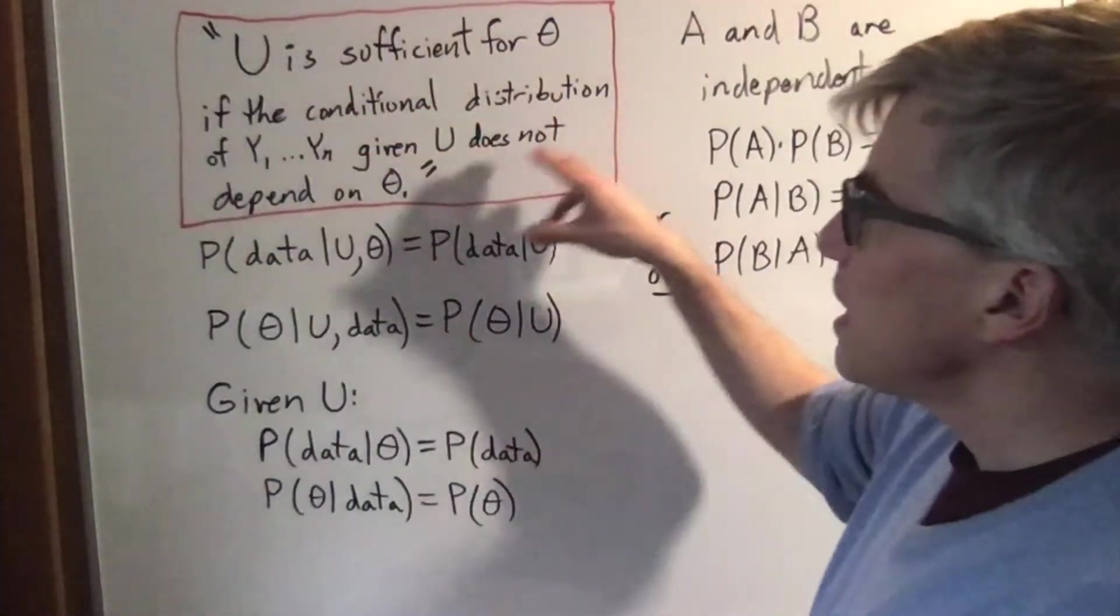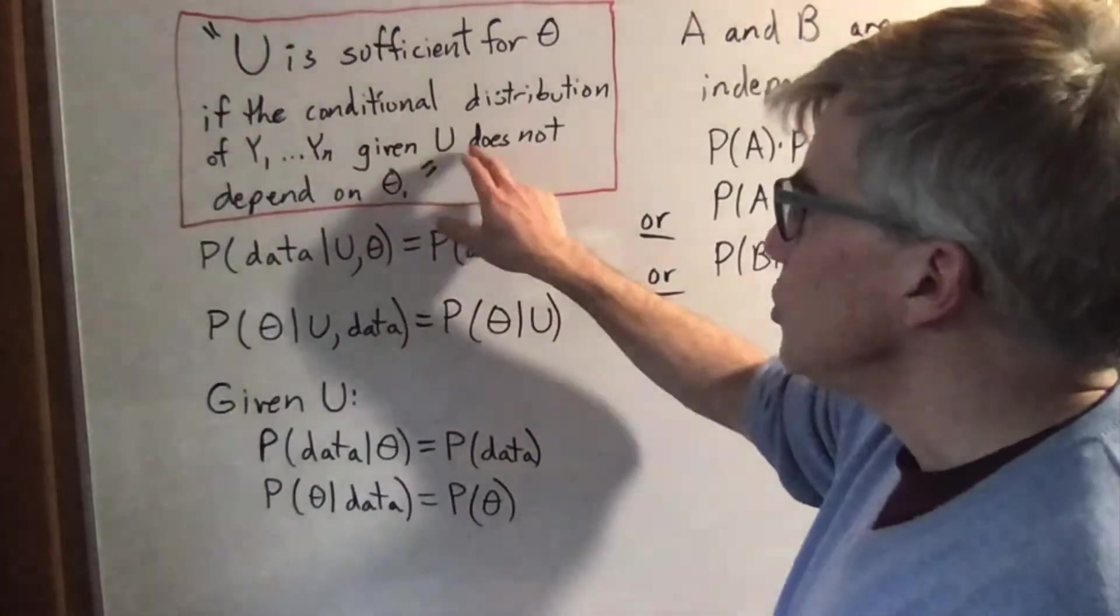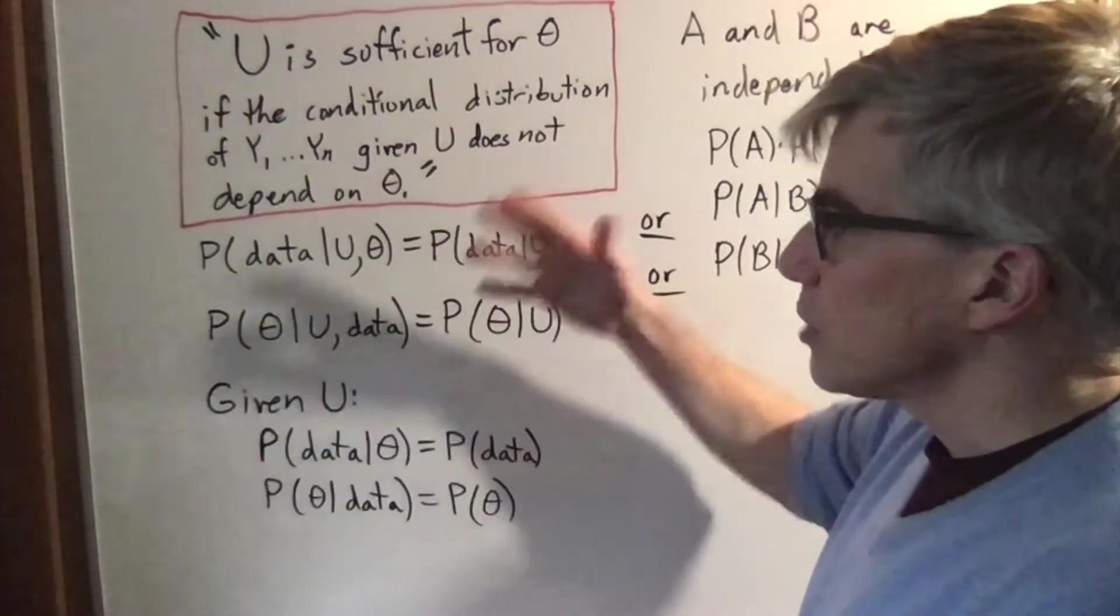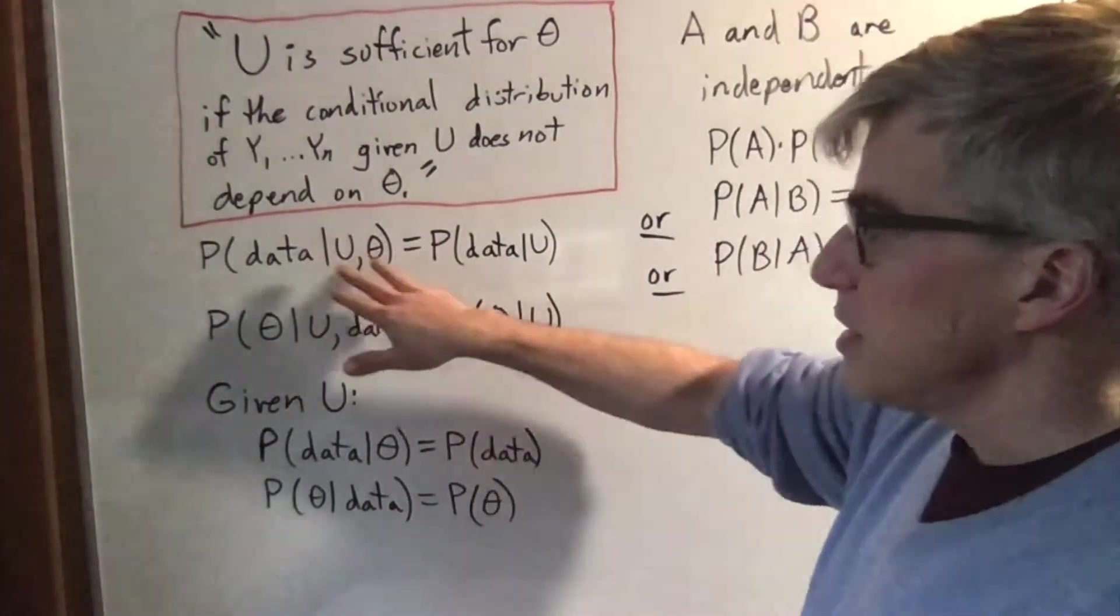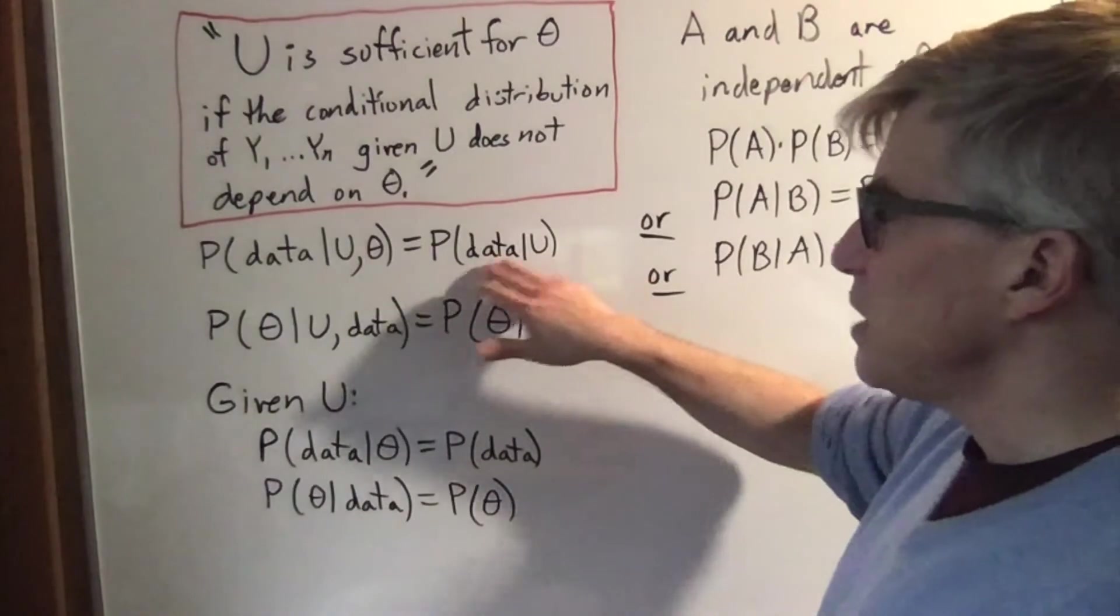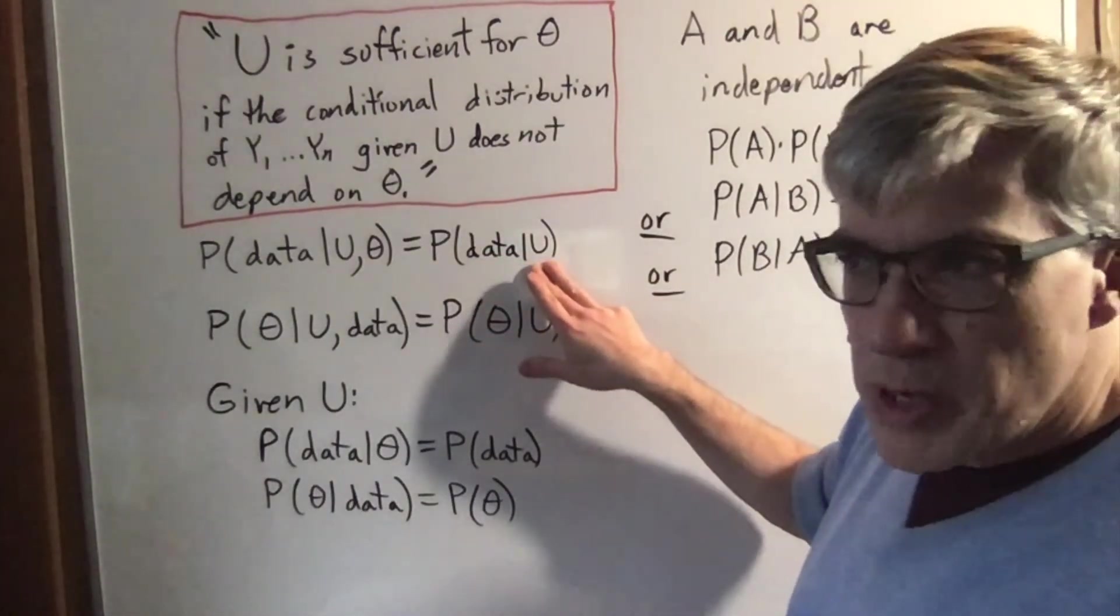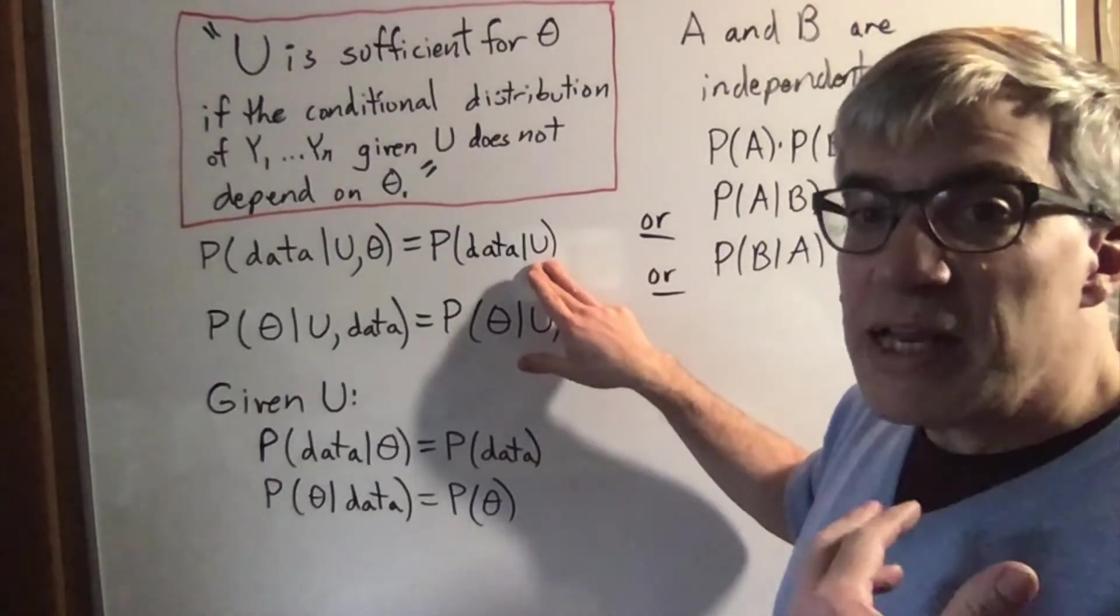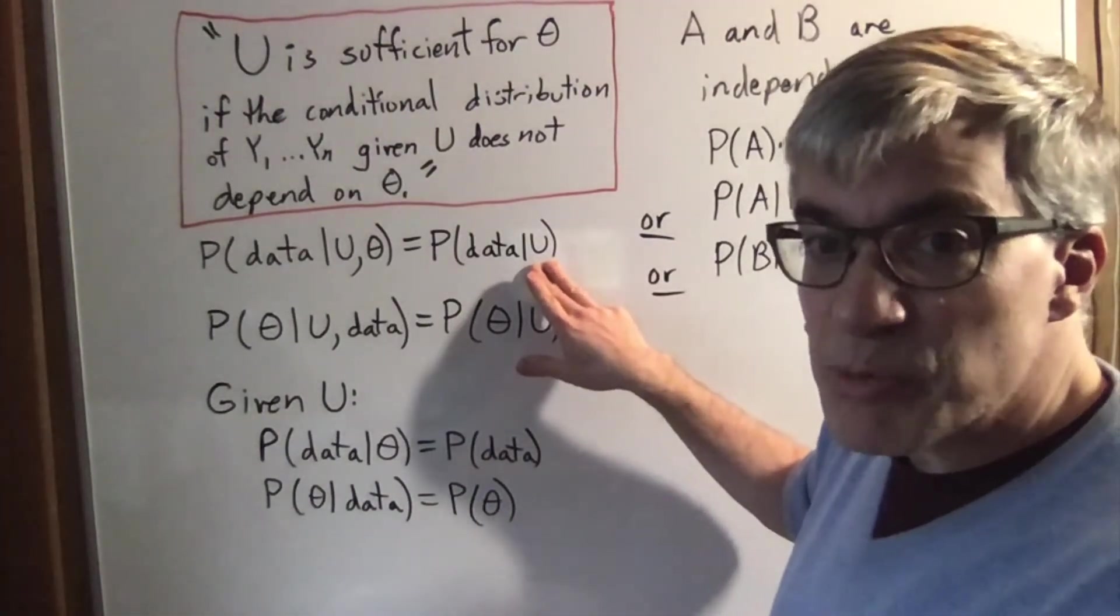What they're trying to say here is the conditional distribution of the Y's given U does not depend on theta. In other words, they're saying the probability of getting the data given the statistic and theta is equal to the probability of data given U. Now that seems to have absolutely nothing to do with you don't have to go back to the data for more information if you have the sufficient statistic and you're trying to estimate a parameter.